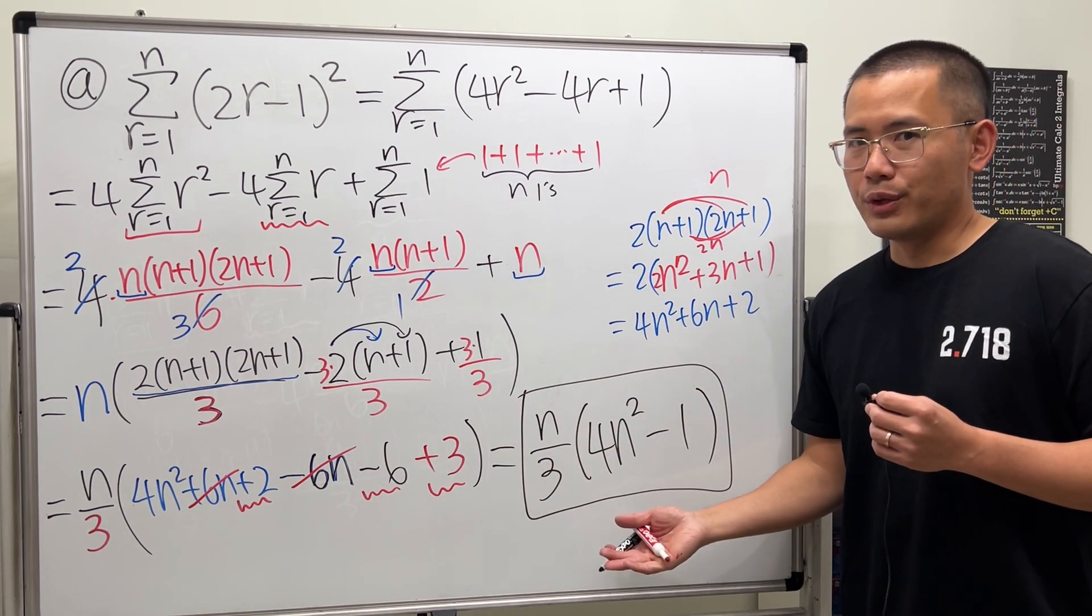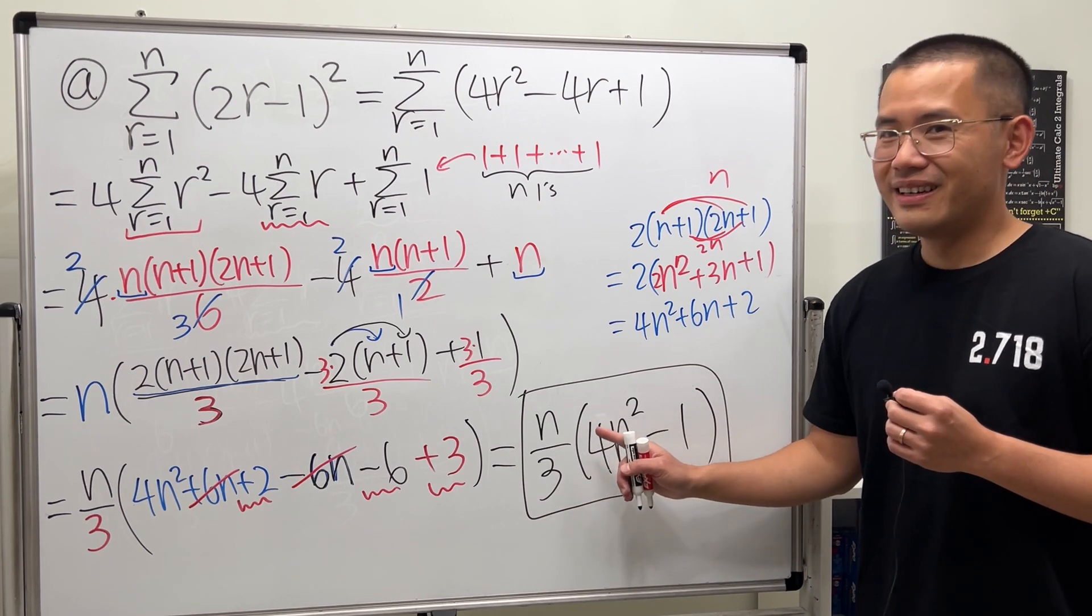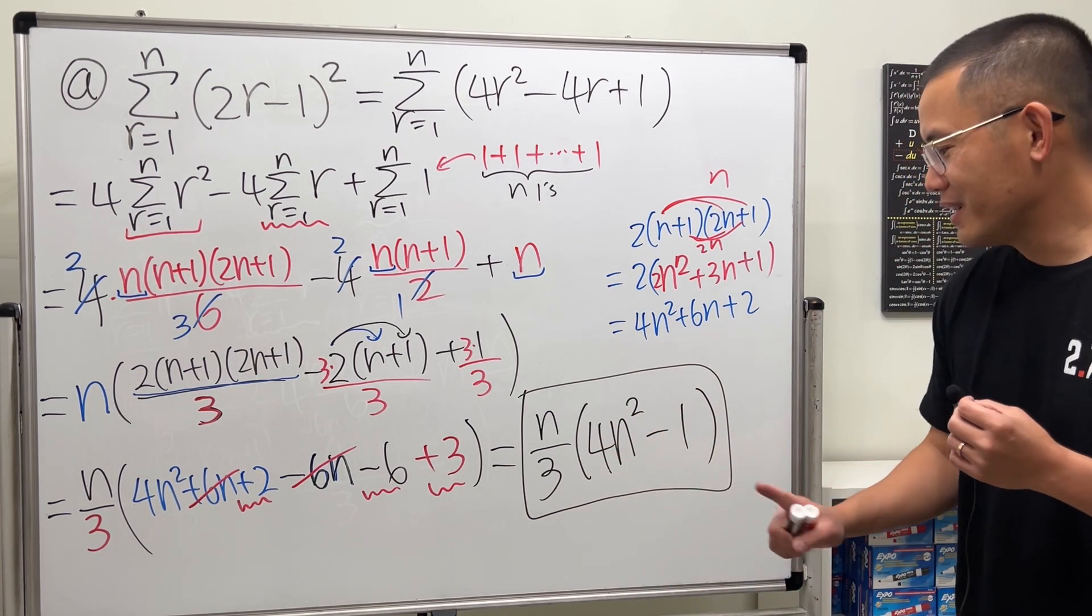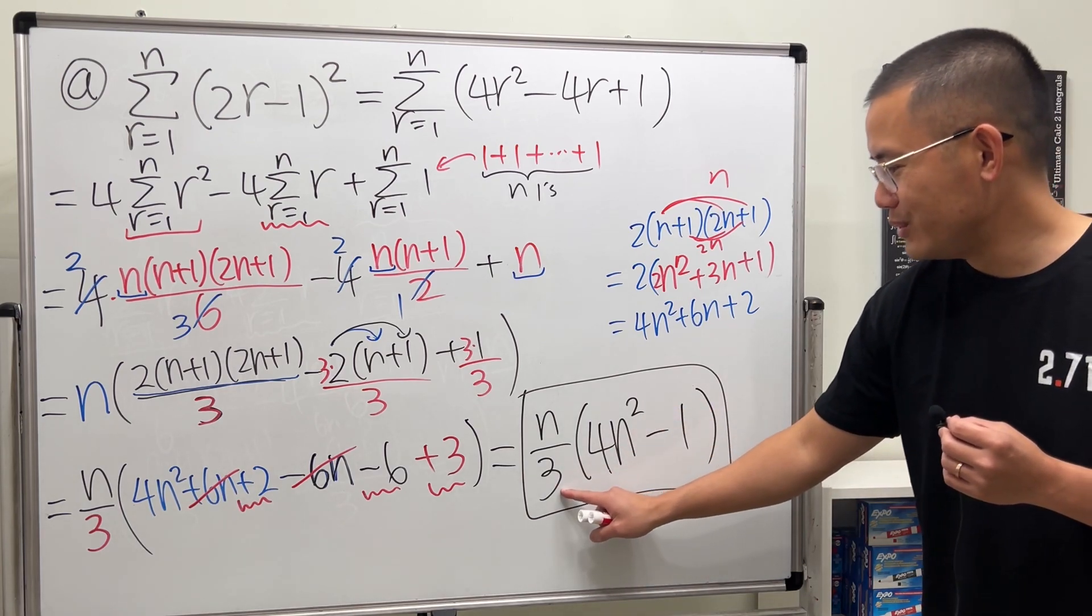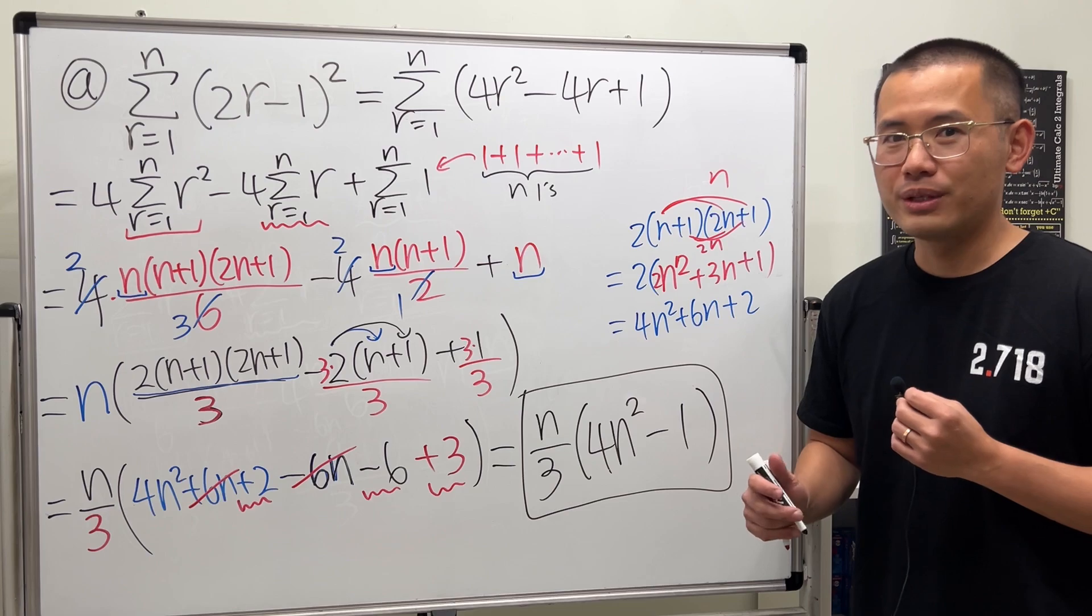They're pretty much told us the answer already, except for this coefficient. So, the coefficient is 4. And it's actually pretty cool, because we have the 1, 2, 3, 4. Alright, so that's the first part. Now, let's take a look at the second part.